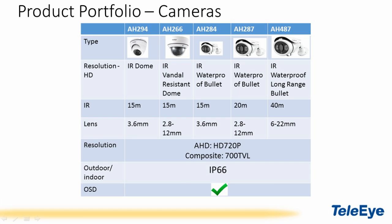In addition, they are all equipped with IP66 weather protection and have an OSD menu. The JN500 series DVR comes in 4, 8, and 16 channel configurations.